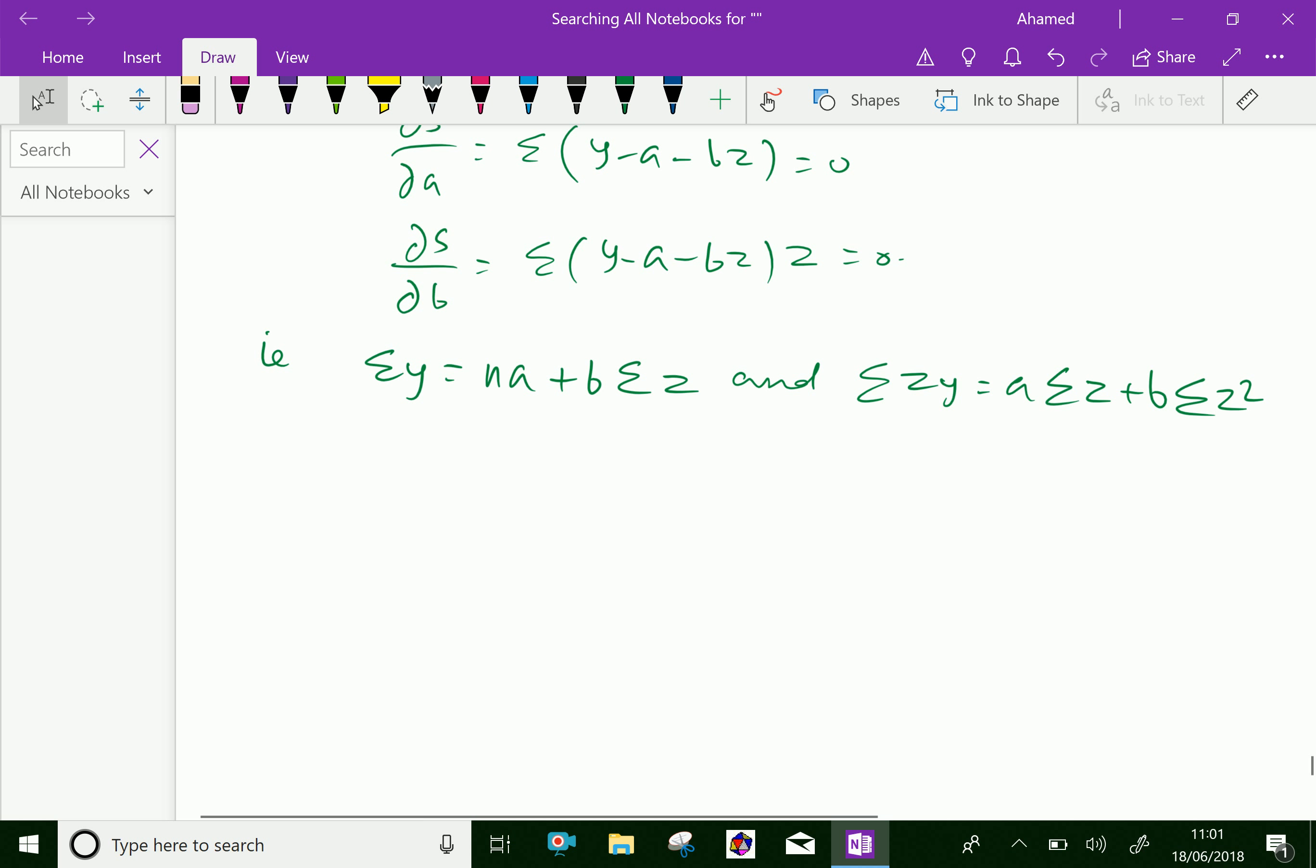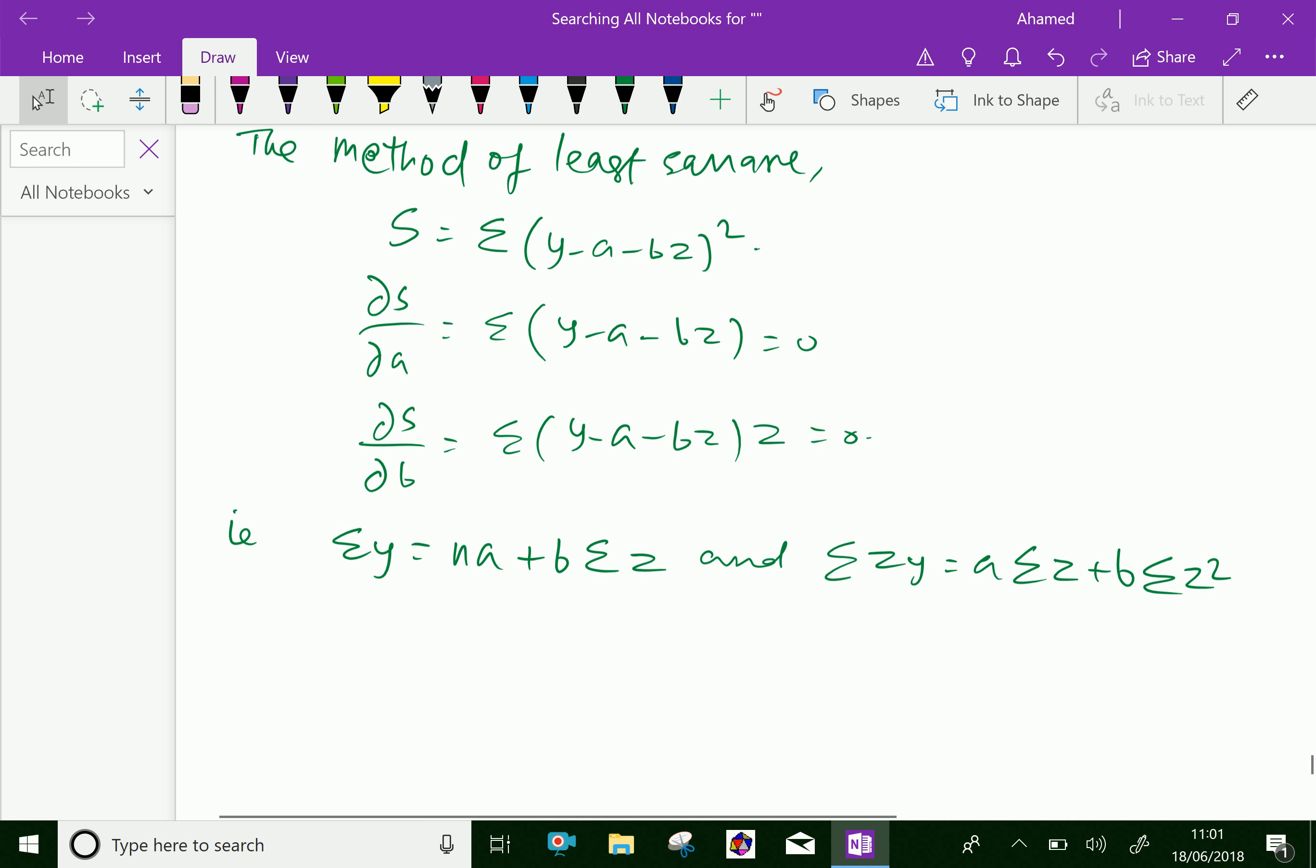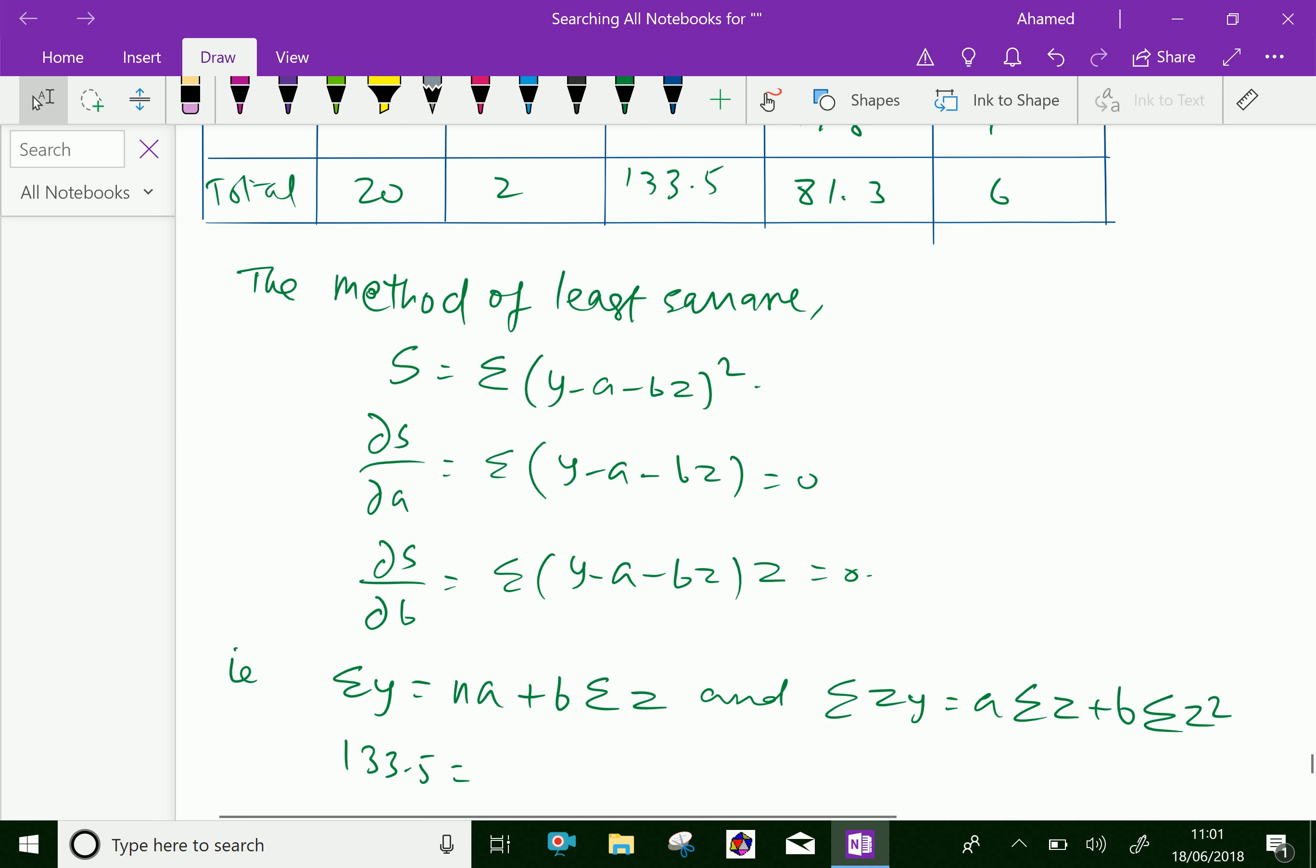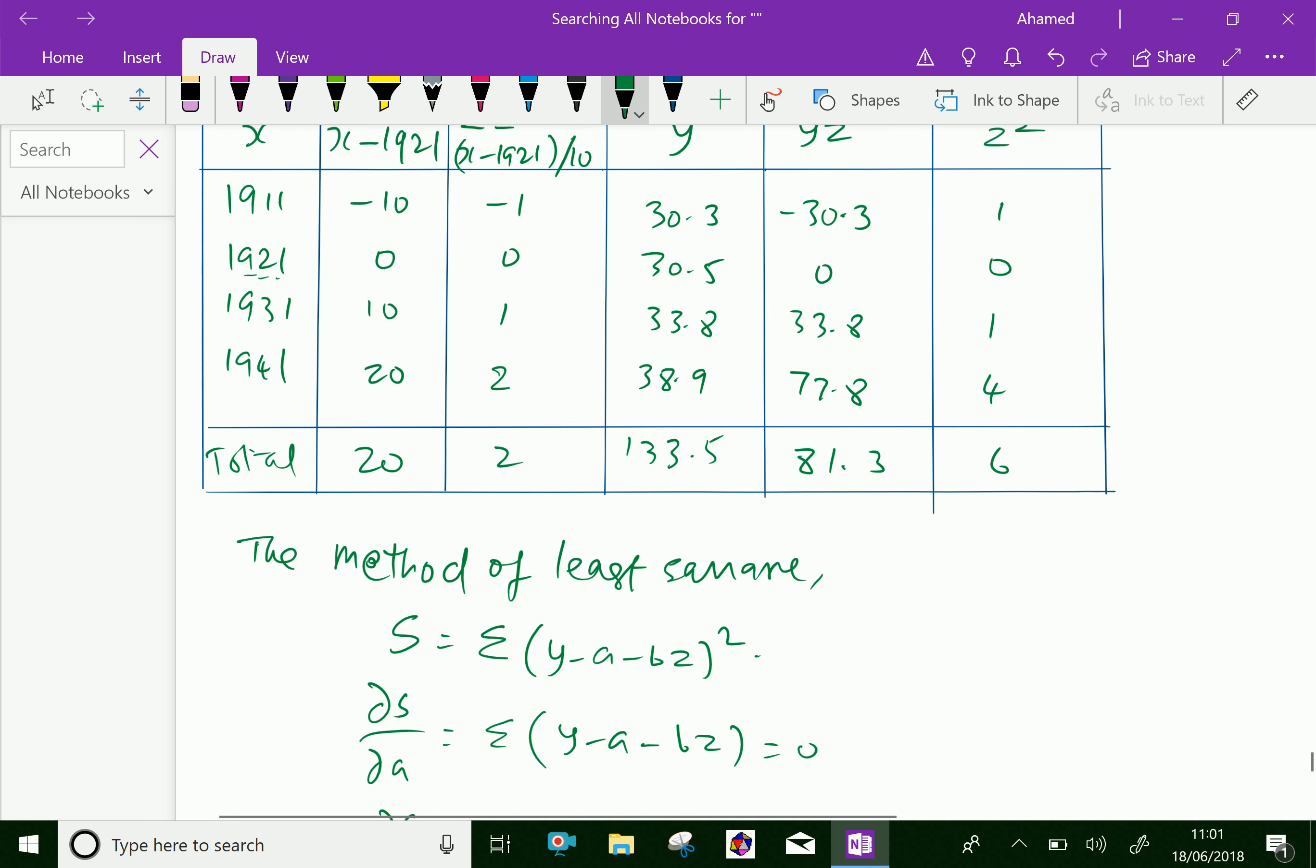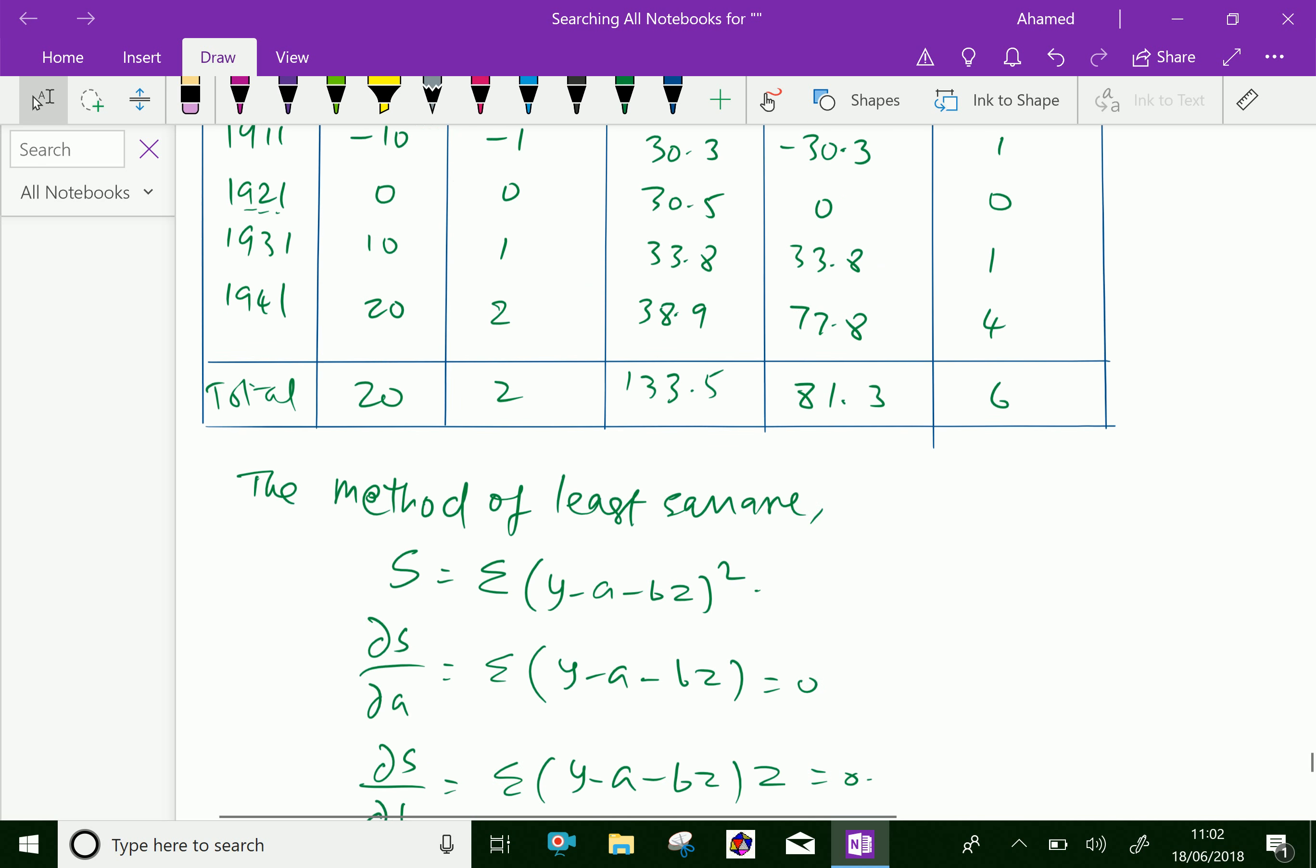Now, by solving this, sigma y is 133.5 equal na. Number of observation is 1, 2, 3, 4, that is 4a, plus b into sigma z. Sigma z is 2, so you can write 2b here.